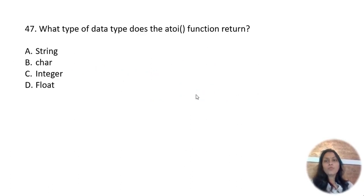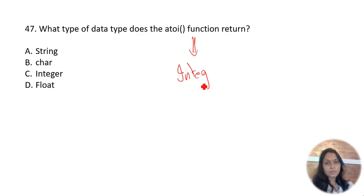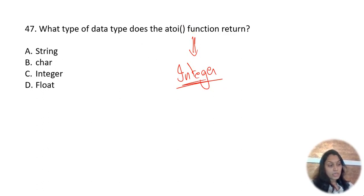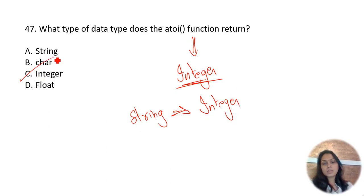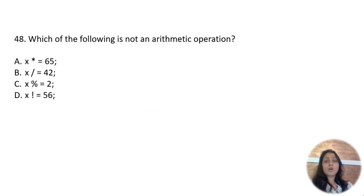What data type does the atoi function return? The atoi function always returns an integer value. 'a to i' — it converts a string argument to integer. Option C is the correct one.